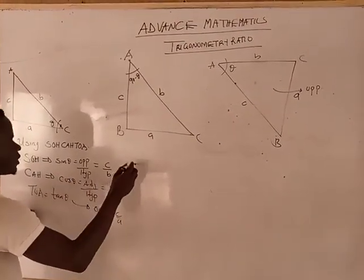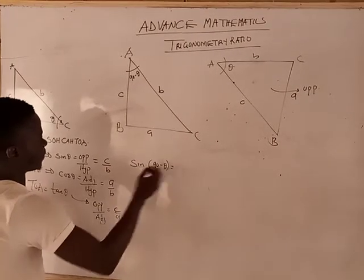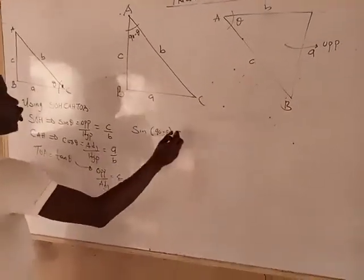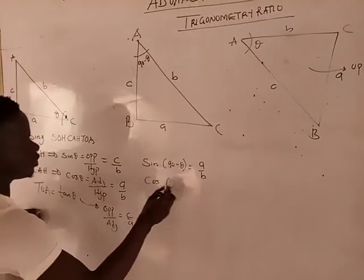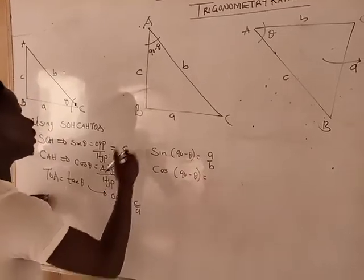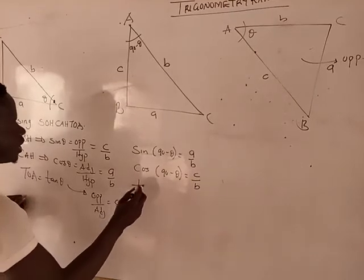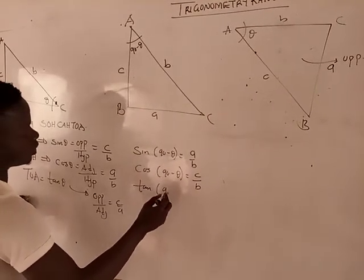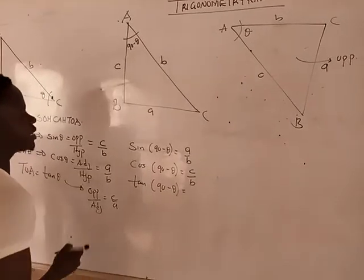we have sine of 90 minus theta to give A over B, cosine of 90 minus theta to give C over B, and tangent of 90 minus theta, which is opposite over adjacent, that is A over C.